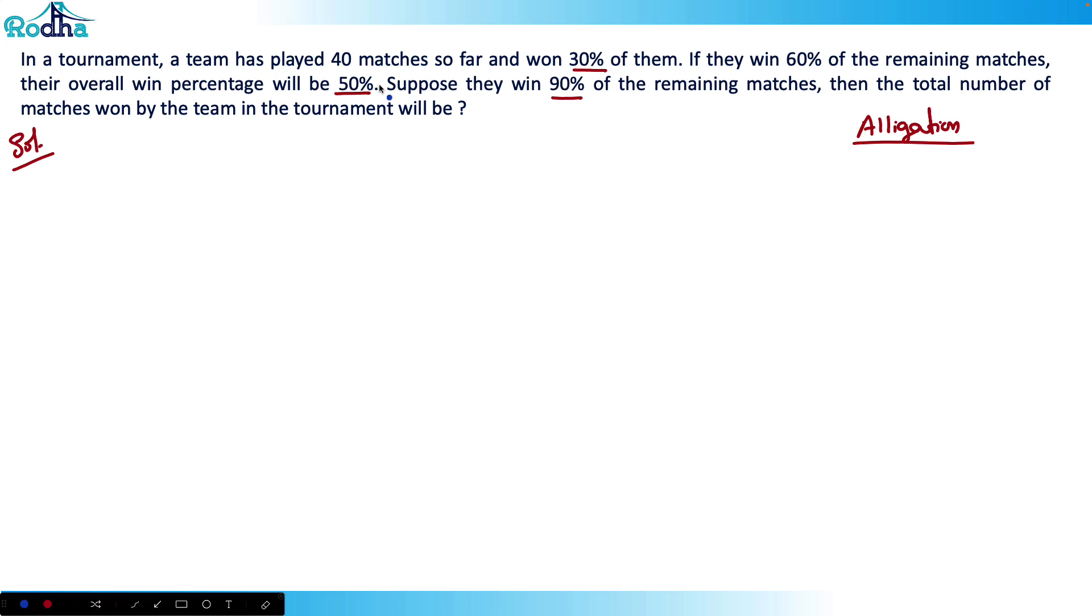Let me draw this line. In the first part, in the first 40 matches, our team has won 30%, so they have 30% wins here. Now let's say in the remaining x matches, in the remaining x matches...